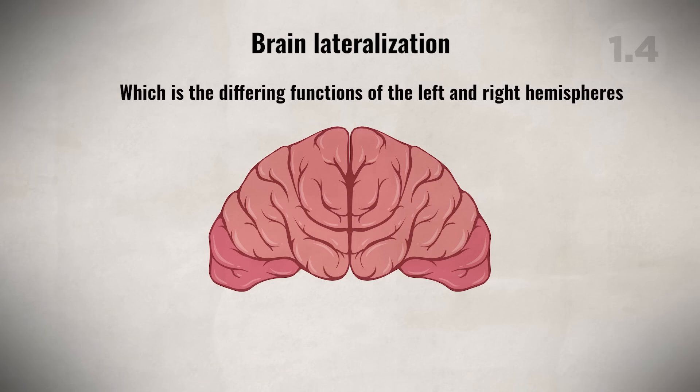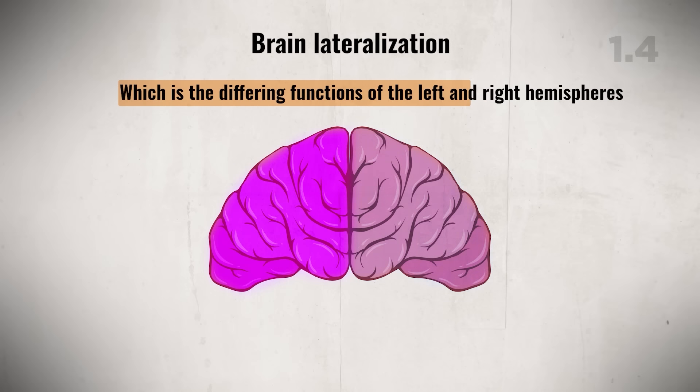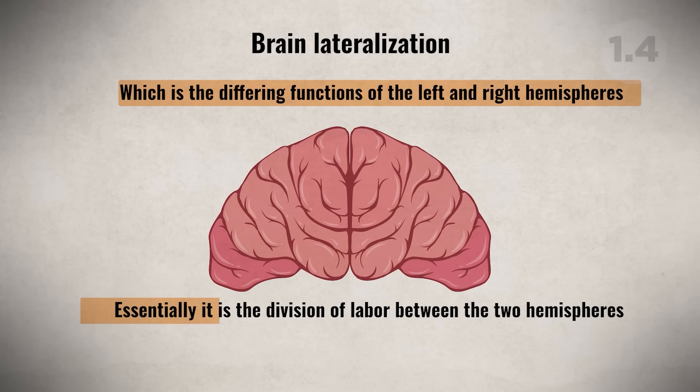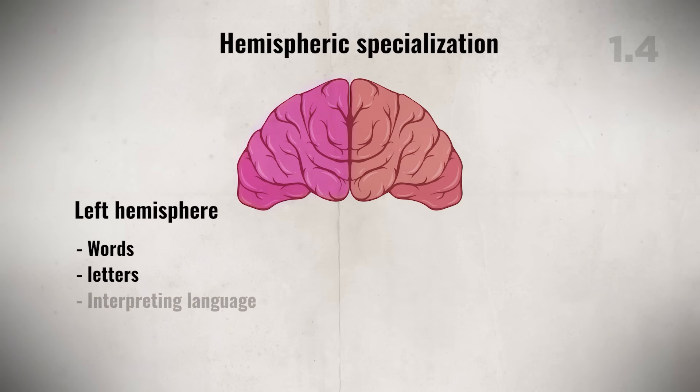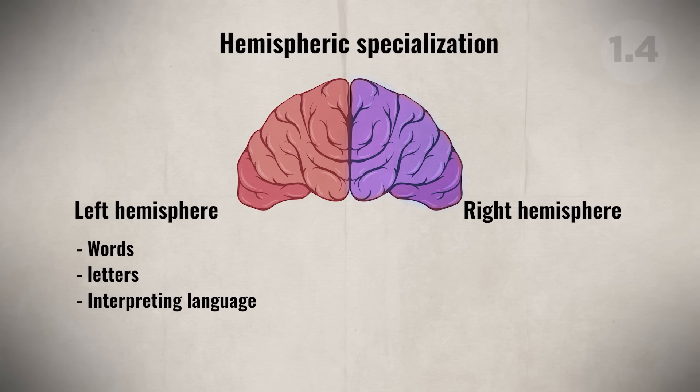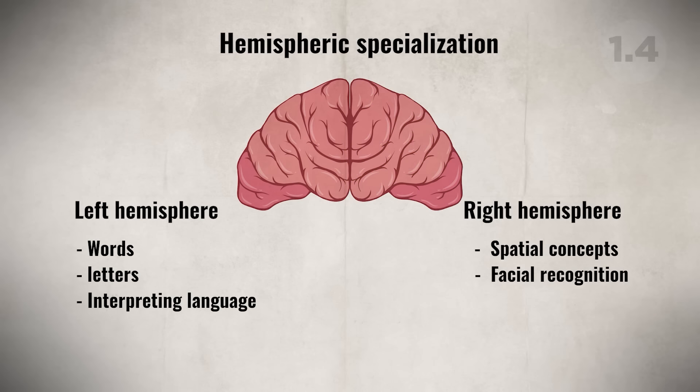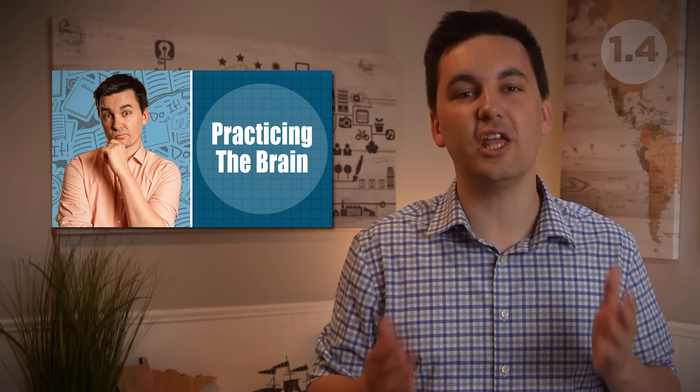Today we know that the brain uses brain lateralization — the differing functions of the left and right hemispheres, essentially a division of labor. Each hemisphere has different areas it is more efficient in, but we all use both hemispheres to accomplish different tasks. No one is simply left-brained or right-brained. The left hemisphere is better at recognizing words, letters, and interpreting language, while the right hemisphere is better at spatial concepts, facial recognition, and discerning direction.